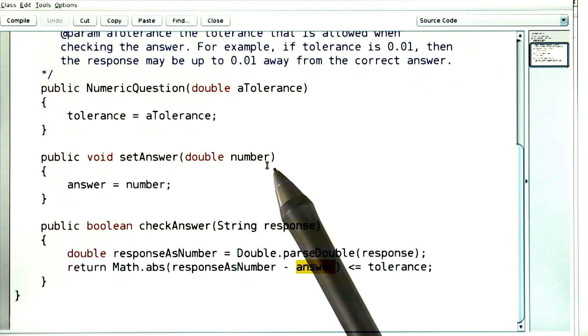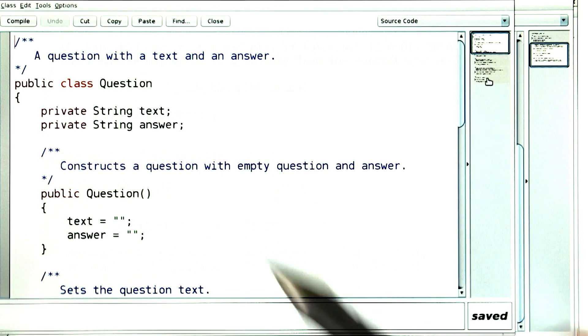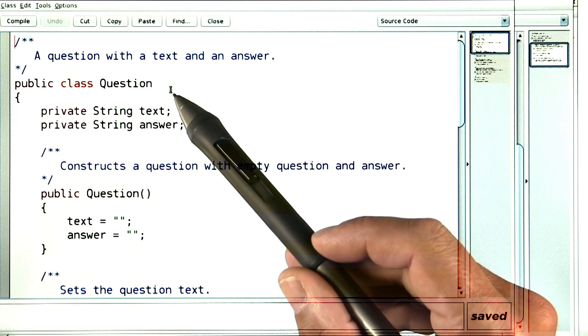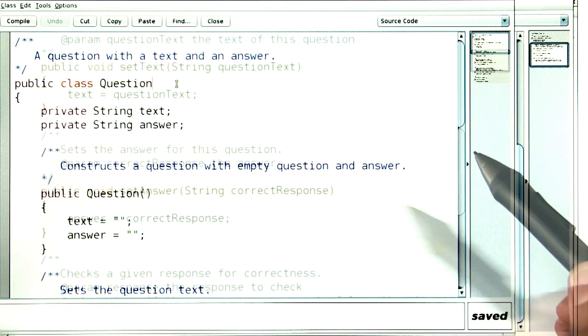the set answer method here takes a double, so it's not a string. And that means it's different from the set answer method that was defined in the question class. That method took a string.